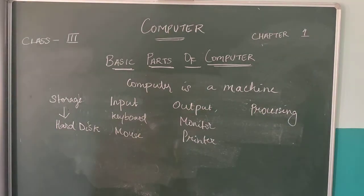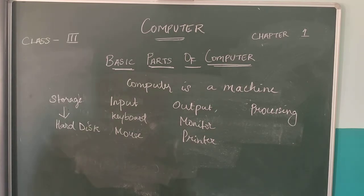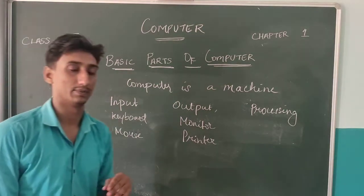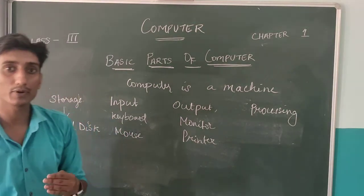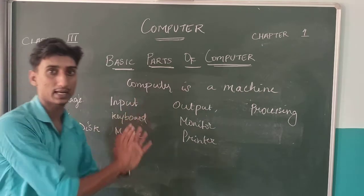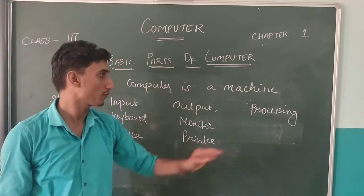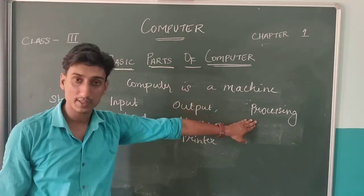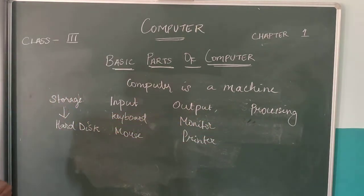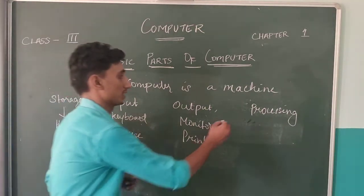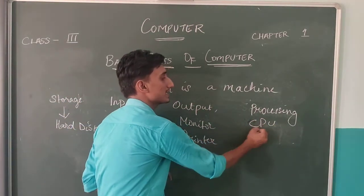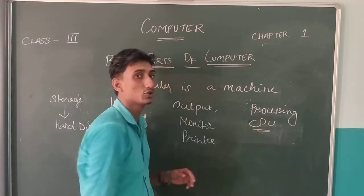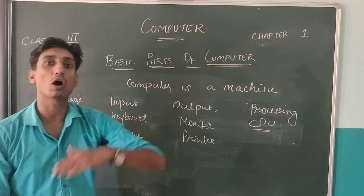Processing: you give input and you get output. The link between them is processing. The processing device is your CPU. CPU is your processing device, which takes input commands and produces output.